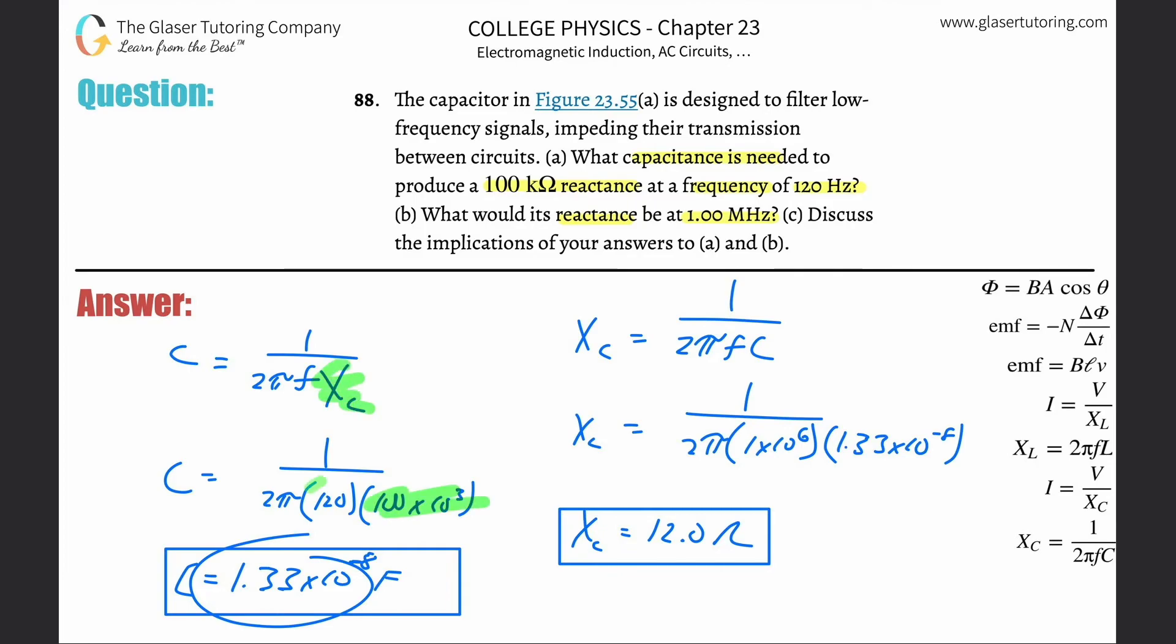And notice the frequency associated here. Now we're talking about a lower capacitive reactance and notice the frequency. Basically, as the frequency of oscillation increases - high frequency - we get less resistance. When we have a lower frequency, we get more resistance.